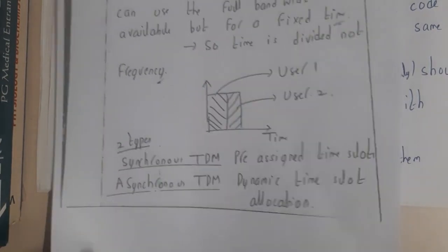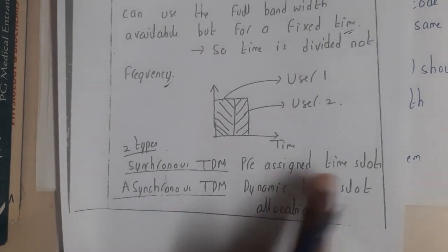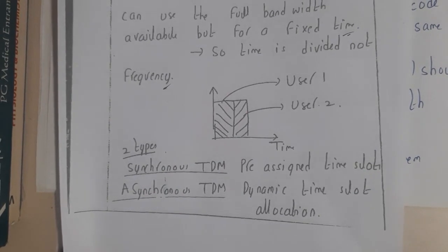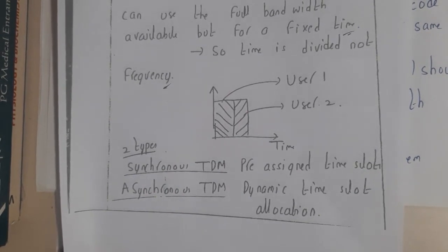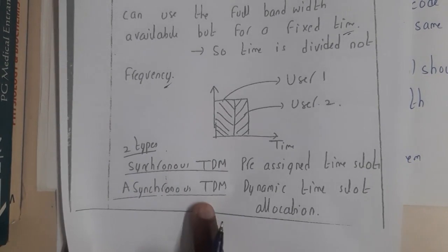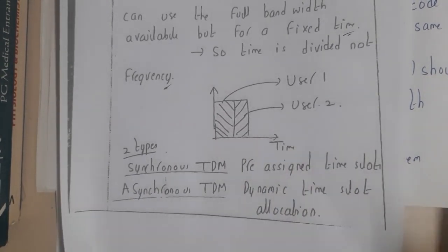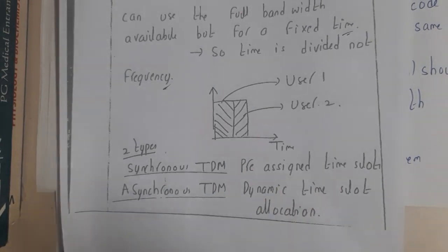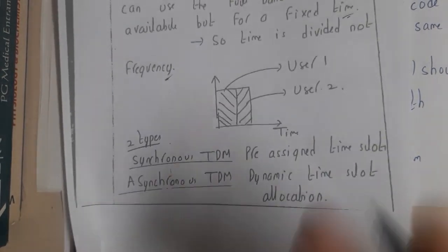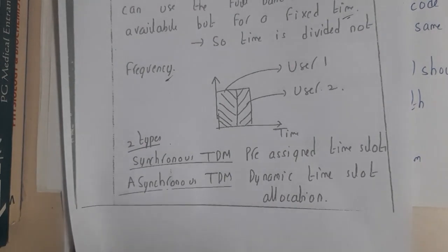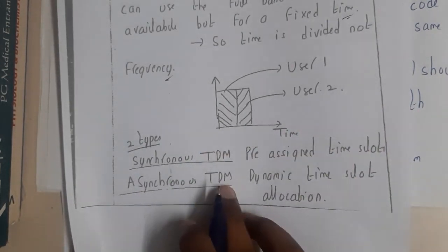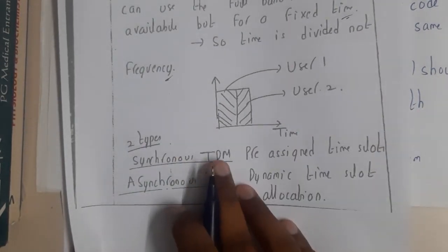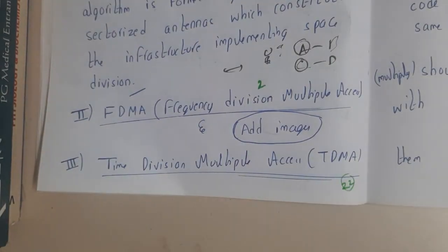TDMA can be synchronous or asynchronous. Synchronous means slots are pre-defined — each user gets only five minutes maximum. Asynchronous means slots are dynamically allotted based on requirement: if one user wants one minute they get one minute, if another wants two minutes they get two minutes, or even one hour. In synchronous, slots are fixed; in asynchronous, there is no fixed time slot.